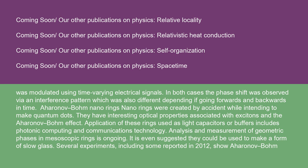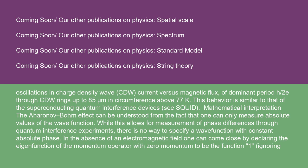Aharonov-Bohm nanorings: Nanorings were created by accident while intending to make quantum dots. They have interesting optical properties associated with excitons and the Aharonov-Bohm effect. Application of these rings used as light capacitors or buffers includes photonic computing and communications technology. Analysis and measurement of geometric phases in mesoscopic rings is ongoing. It is even suggested they could be used to make a form of slow glass. Several experiments, including some reported in 2012, show Aharonov-Bohm oscillations in charge density wave (CDW) current versus magnetic flux of dominant period h/2e through CDW rings up to 85 micrometers in circumference above 77K. This behavior is similar to that of the superconducting quantum interference devices (SQUID).